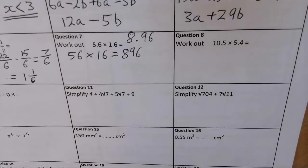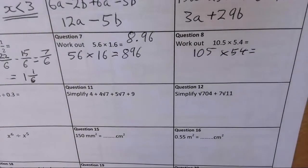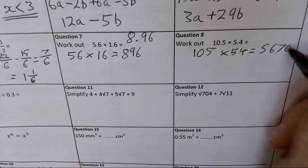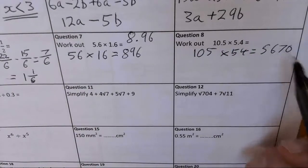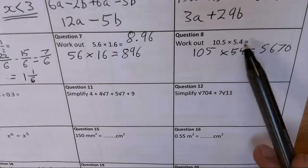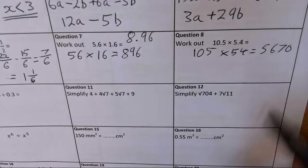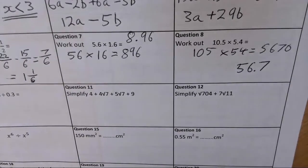For 10.5 times 5.4, I do 105 times 54. That gives 5,670. Both numbers were multiplied by 10, so the result is multiplied by 100 and must be divided by 100. The answer is 56.7 — and you can sense-check: approximately 10 times 5 is about 50, so 56.7 is reasonable.